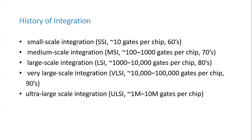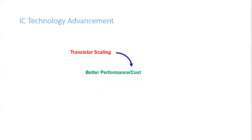The most important factor that boosted IC advancement is transistor scaling — miniaturizing the transistor so more can fit on a given area. Because of this, cost is reduced and performance is improved, giving you more customers and market growth. A simple example: in 2000, mobile phones in India had very basic functions, whereas now computing, entertainment, and cameras are all on your mobile.